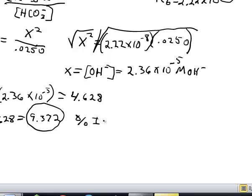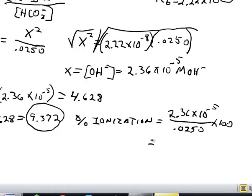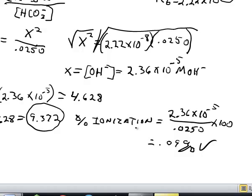Finally, we calculate percent ionization to verify our assumption that X was small. We divide X (2.36 × 10^(-5)) by 0.0250 and multiply by 100, giving approximately 0.09%, well below the 5% rule. This confirms our assumption was valid, and we're done.